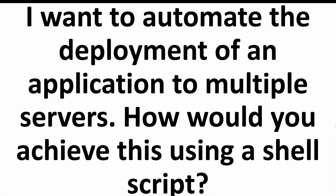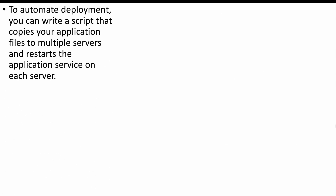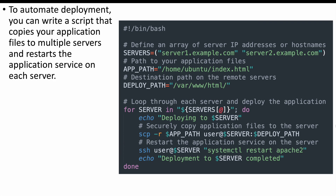The first question is: I want to automate the deployment of an application to multiple servers. How would you achieve this using a shell script? For this, we will be writing a script which will copy our application to multiple servers. And once the application has been copied, we'll need to restart the service as well on each of the servers.